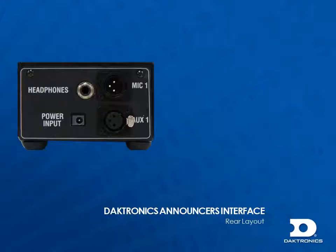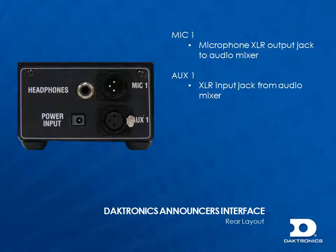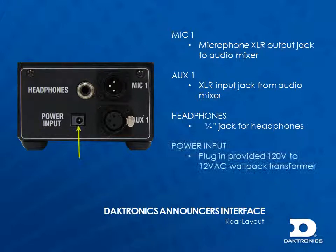On the rear of the interface box is a Mic 1 jack, which is the microphone output to the audio mixer. Then there is an Aux 1 jack, which is an audio input to listen to various audio feeds through the headphones. The headphone jack is the location to plug in the supplied headphones. Lastly is the power input, where you connect the supplied wallpack transformer.